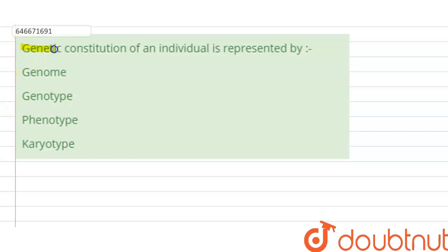...that genetic constitution of an individual is represented by? So we are having four options as we can see here. First option is genome, second option is genotype, third option is phenotype, and fourth option is karyotype. So as we can see here...